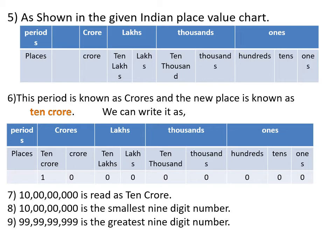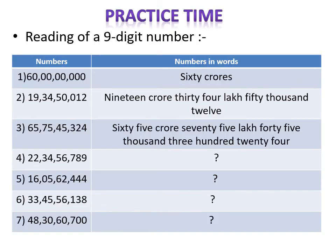This period is still known as crores, but the new place is known as ten crores. The number now becomes ten crores — the smallest nine digit number. The greatest nine digit number is ninety-nine crore ninety-nine lakh ninety-nine thousand nine hundred and ninety-nine.